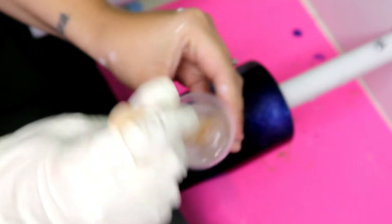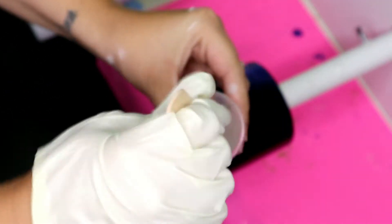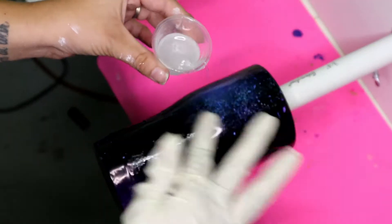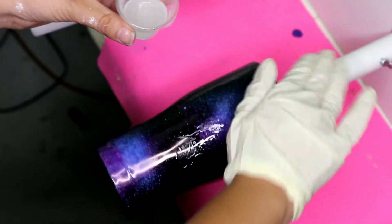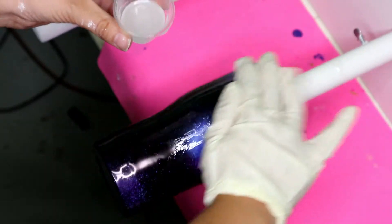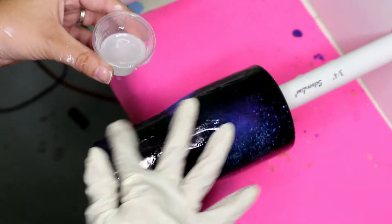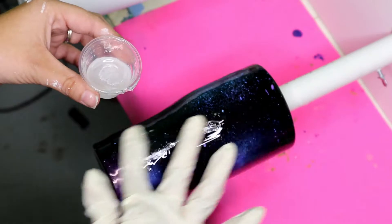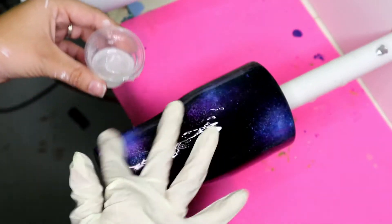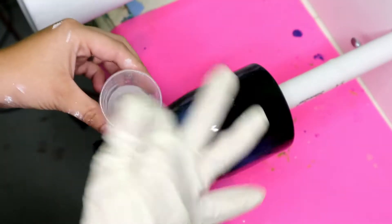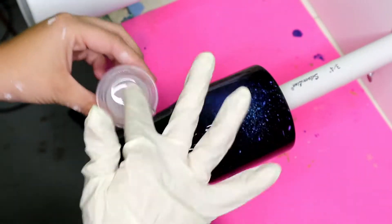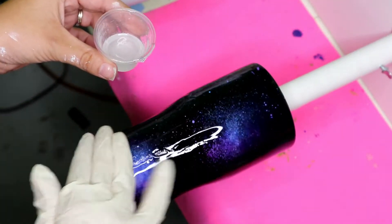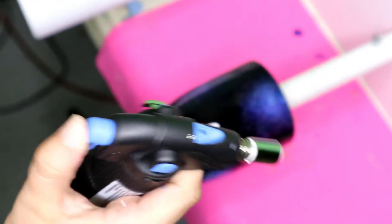Once your alcohol inks are dry, you can go ahead and do your first layer of resin over top of them. For this layer I used Facet from CCDIY and I let that dry for about four hours before I went into my next step. Always make sure you are using your torch to pop any bubbles. It is such a lifesaver.